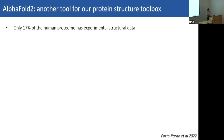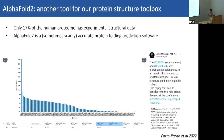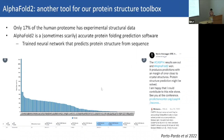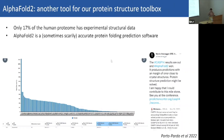AlphaFold was built to tackle the problem of what structure our proteins have. At the moment, only 17% of the human proteome has experimental structural data associated with it, according to this paper. AlphaFold was developed around 2020–2021, and it entered one of these international protein structure prediction competitions called CASP competitions. AlphaFold did dramatically better than the rest, and it was mind-blowing at the time.